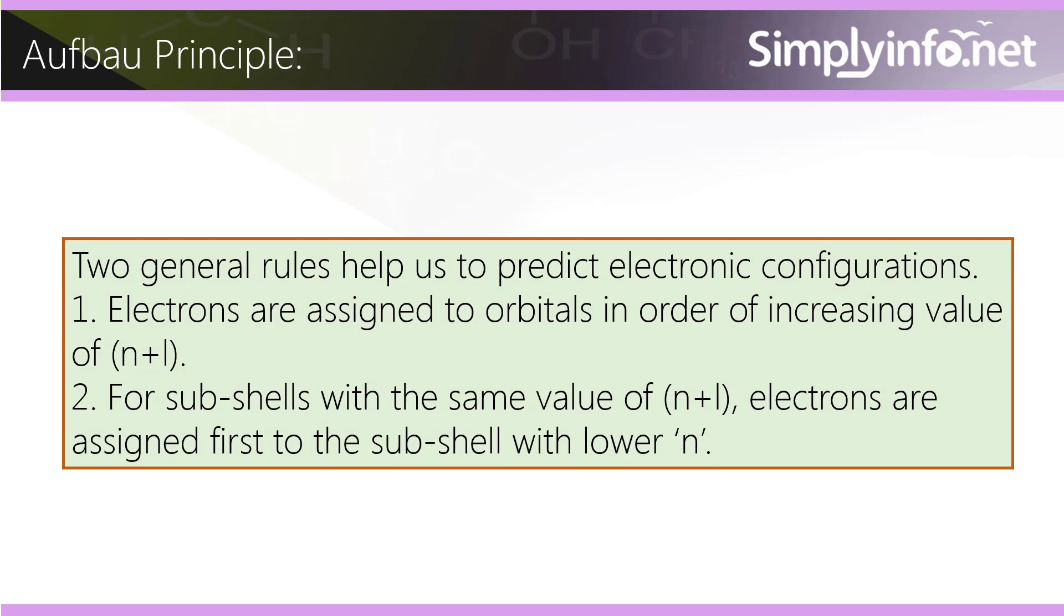Two general rules help us to predict electronic configuration. Electrons are assigned to orbitals in order of increasing value of n+l. For subshells with the same value of n+l, electrons are assigned first to the subshell with lower n.